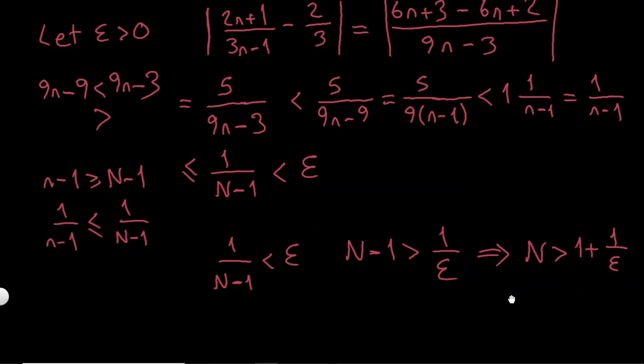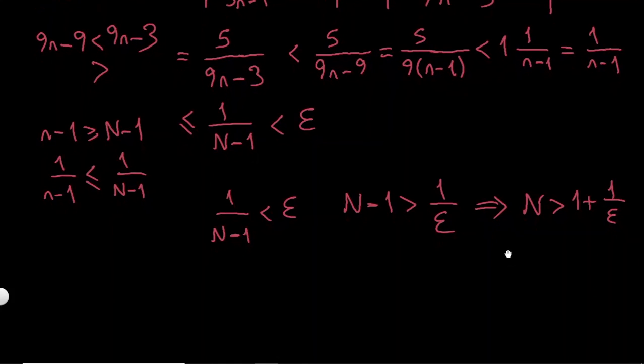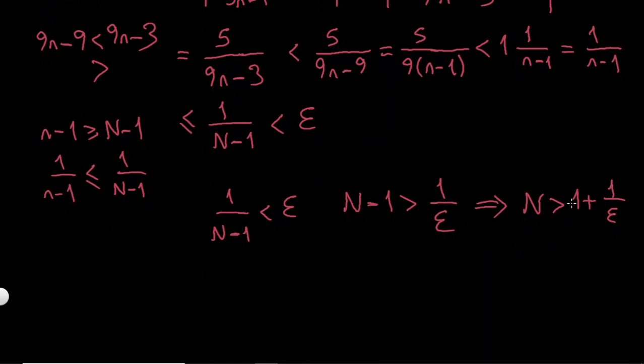So now I already have my N, almost, so if I set this N being equal to 1 plus 1 over epsilon, it will be kind of done, but as like in the previous example, 1 over epsilon may not be an integer.